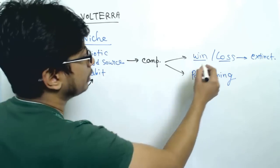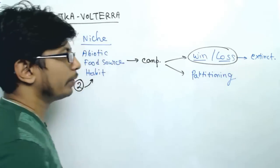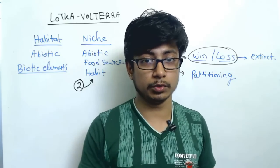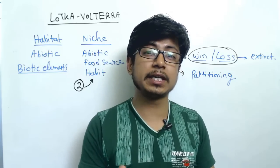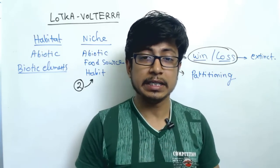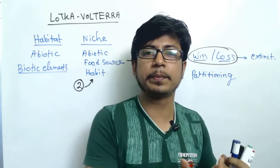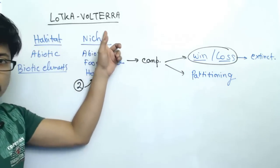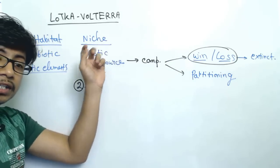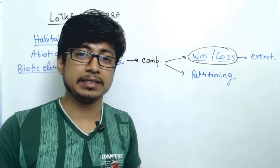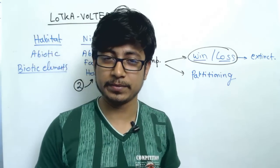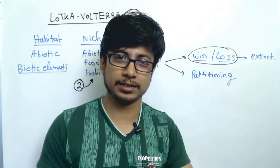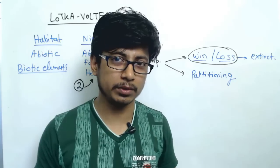We are most interested in the first situation — when two species are competing against each other, one will win and one will lose. Whenever two species are competing, how can we predict the outcome of that competition? The Lotka-Volterra theory is going to help us predict the outcome of a competition based on the impact of one species on another.